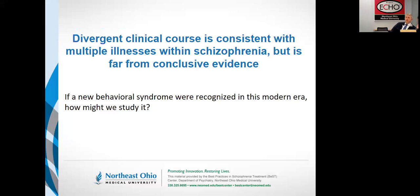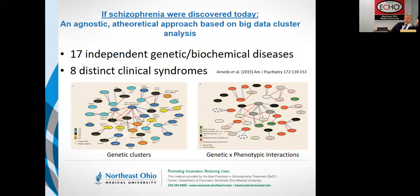To again hammer home the idea that not all schizophrenia is the same: if we were to discover this today, we would approach it entirely differently than we historically have in the field. We would apply big data and genetics. And if we did that, we would conclude — as some researchers have — that looking at genetic clusters, you would have 17 different clusters of gene and biochemical distortions within schizophrenia. Also, using very fine-grained symptom measurement and looking for natural associations amongst those symptoms, there would be eight different clinical syndromes within the DSM-labeled schizophrenia.